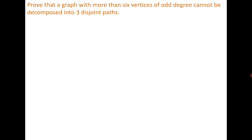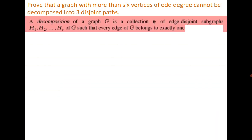The first question is: prove that a graph with more than 6 vertices of degree 4 cannot be decomposed into 3 disjoint paths. First, let's see what decomposition means. Decomposition of a graph is the collection of edge-disjoint subgraphs of G such that every edge of G belongs to exactly one subgraph.